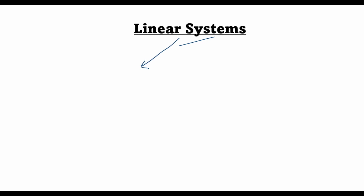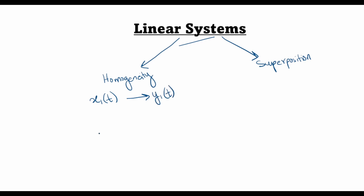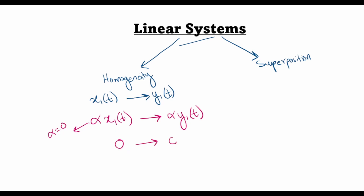A system can be described as linear if it obeys homogeneity and the principle of superposition. Homogeneity implies that if I have an input x(t) which leads to an output y1(t), then if I multiply this input with a constant alpha, then alpha times x1(t) should lead to an output alpha times y1(t). What follows from homogeneity is that if alpha equals zero, then zero input should lead to zero output. This comes from homogeneity: if the input vanishes, then necessarily the output should also vanish.